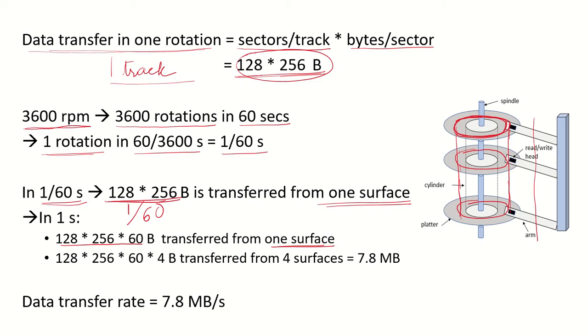So in one rotation data is being read by these read write heads from all surfaces. So 128 into 256 into 60 into 4 bytes transferred which is approximately 7.8 megabytes. So 7.8 megabytes is transferred in one second and this is our data transfer rate, 7.8 megabytes per second.